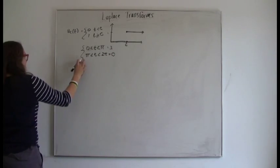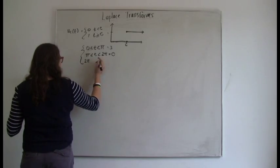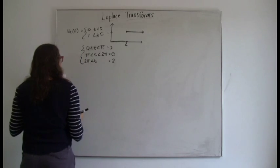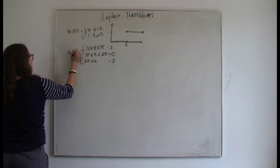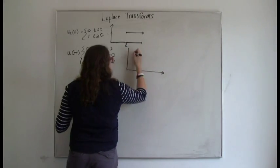And then from 2 pi until the rest of time, it goes back to being 2. So it jumps from the top down to 0, back up to the top, which is the value 2. So the graph of this function would look kind of like this.